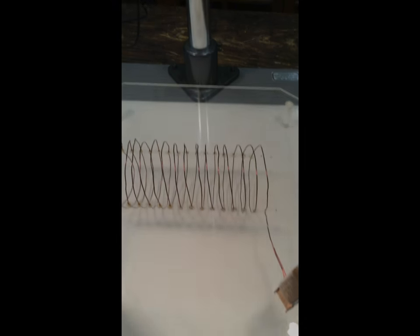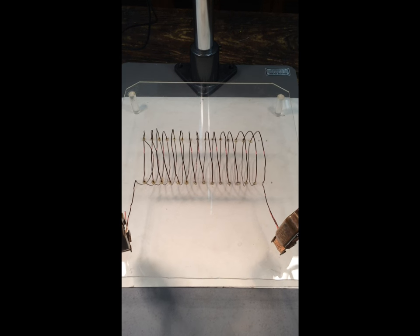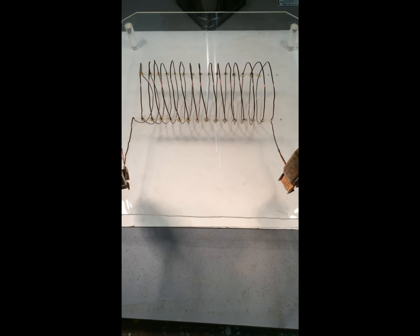So first let's look at the setup. So here we have a solenoid. It's just wire wrapped around a little piece of see-through plastic so we can have our iron filings sit right along the middle of the solenoid.